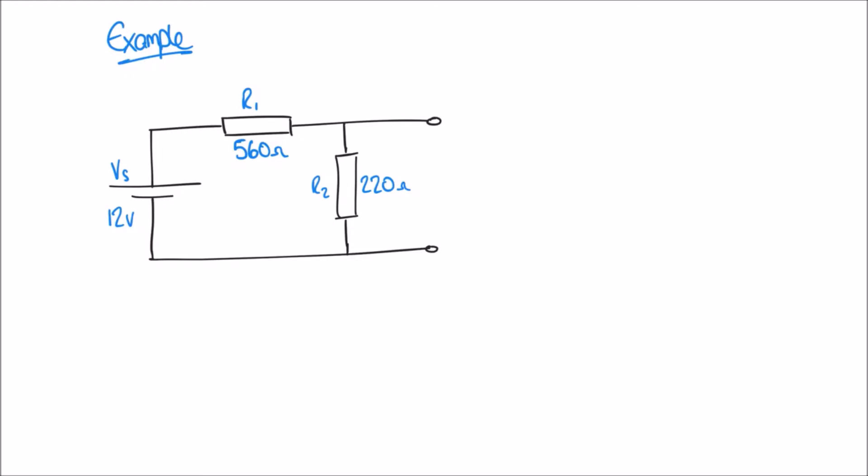Let's have a look at our first example. It's not far from a Thevenin equivalent circuit anyway — we've still only got one voltage source and we've got two resistors as opposed to one. We're going to follow the steps of the theorem and simplify this down to just one voltage and one resistor. Step one was to use the voltage divider rule to work out the voltage across the output terminals, which I'm going to label A and B. If we imagine there's a voltmeter across these terminals, we're measuring across the second resistor, R2.